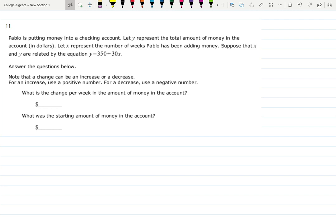In this case we have a situation where we're working with checking accounts. Pablo is putting money into a checking account, and y represents the total amount of money in the account in dollars. Then x represents the number of weeks Pablo has been adding money. So basically x is time in weeks. Suppose x and y are related using this equation over here.